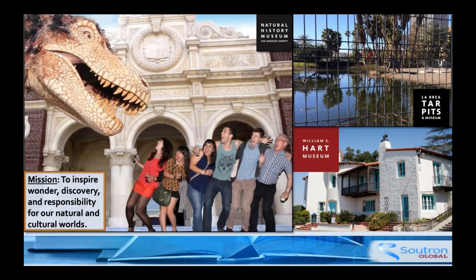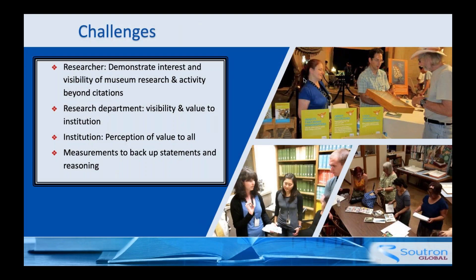So the Natural History Museum of Los Angeles County, where I was chief librarian, is actually a family of museums. It has a main site where the dinosaurs are, along with many other departments, as well as the La Brea Tar Pits and the William S. Hart Museum — named after a silent film star from the 1920s. So that's the environment: multiple physical locations around LA County. Like a lot of cultural institutions, their mission is to inspire wonder, discovery, and responsibility for our natural and cultural worlds.